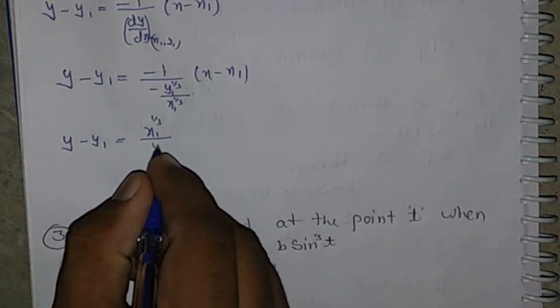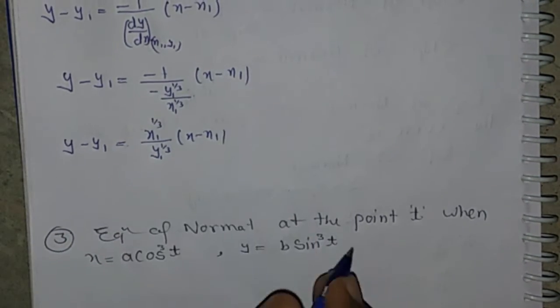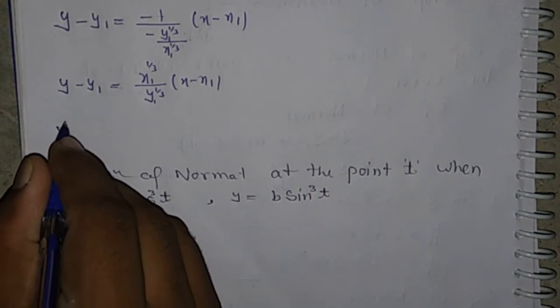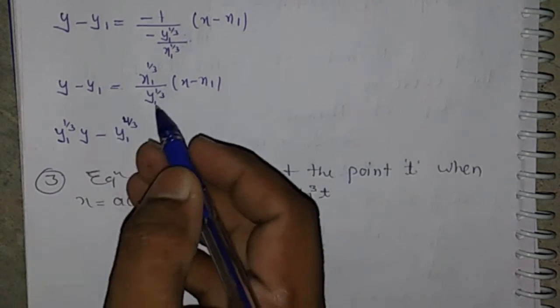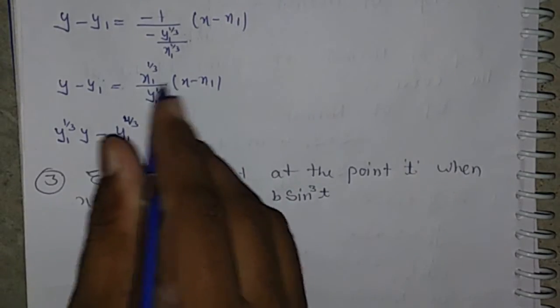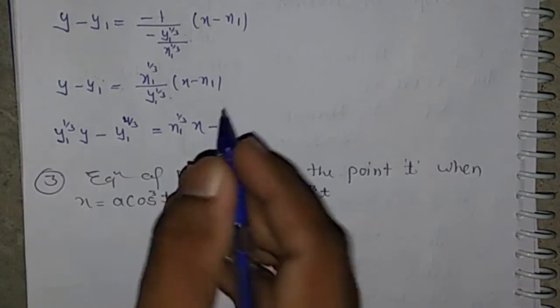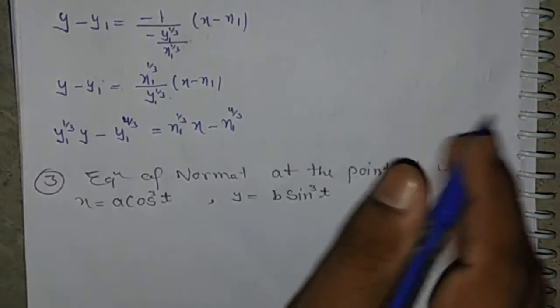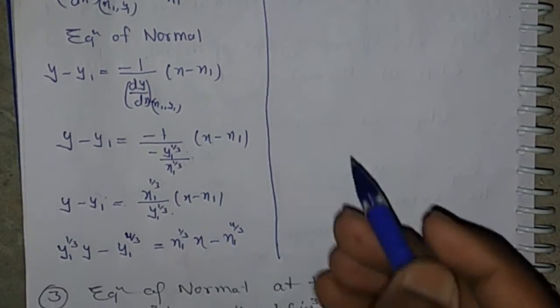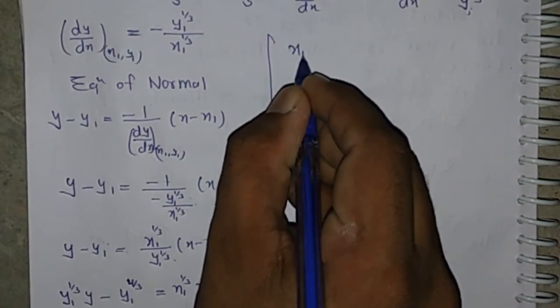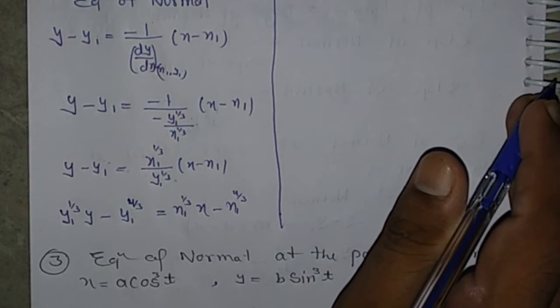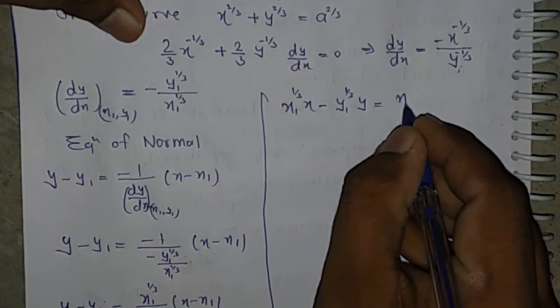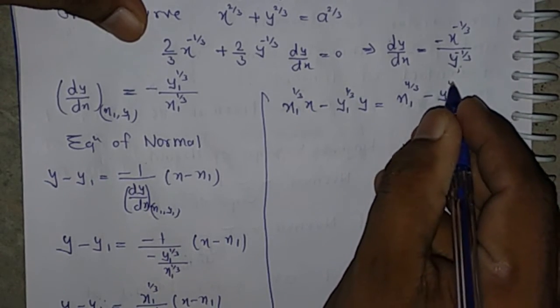Then y - y1 = (x1^(1/3) / y1^(1/3)) * (x - x1). Rearranging: y1^(1/3)(y - y1) = x1^(1/3)(x - x1), which gives y1^(4/3) - [correction: exponent is 1 + 1/3 = 4/3]. So x1^(1/3)*x - y1^(1/3)*y = x1^(4/3) - y1^(4/3).